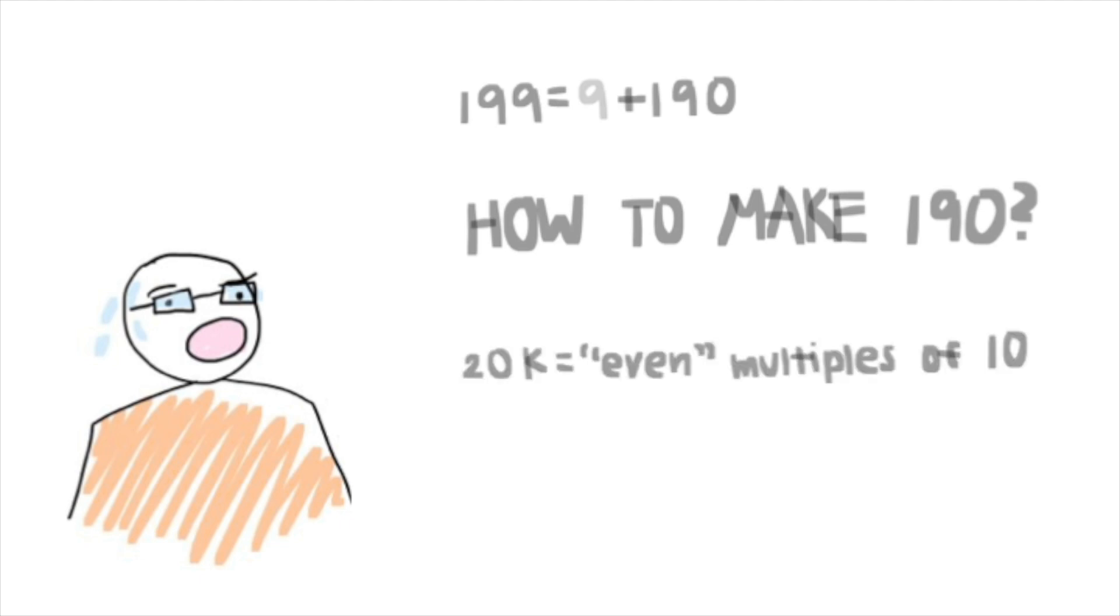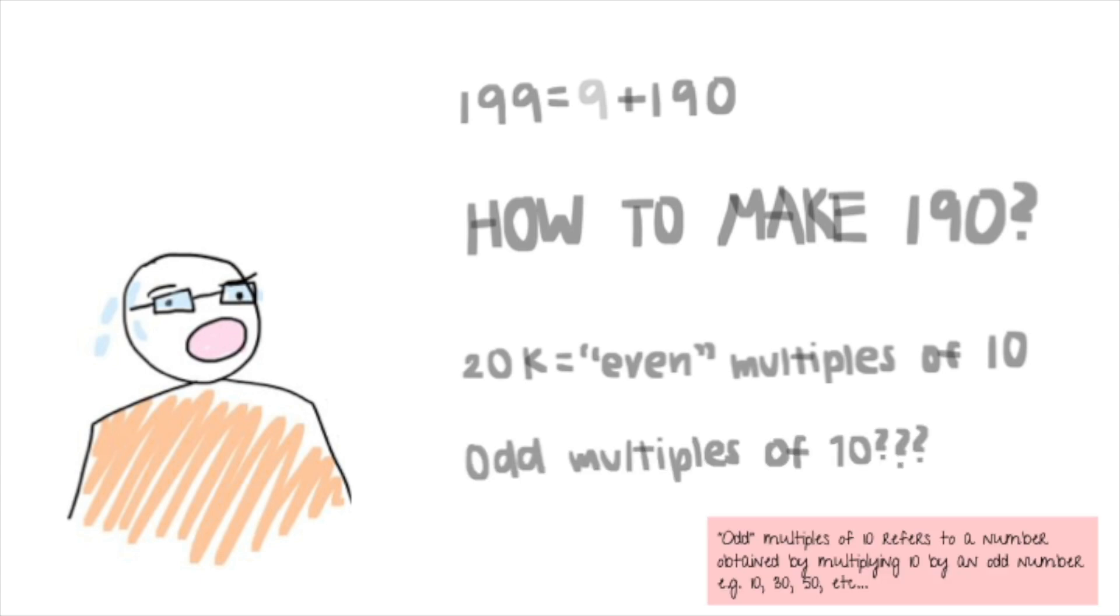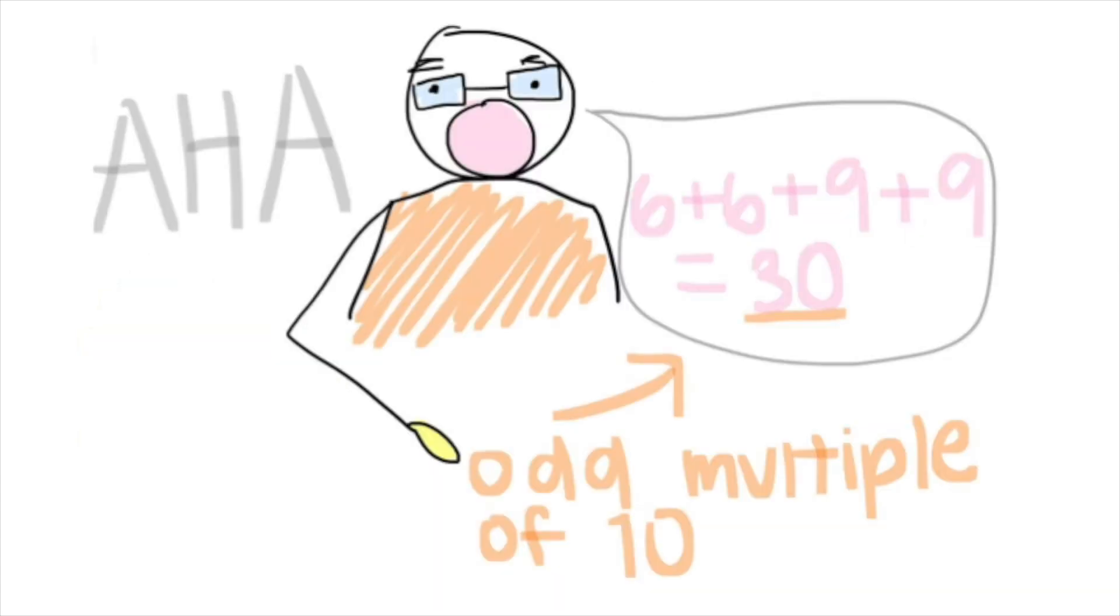We know that we can make any even multiple of 10 with a combination of 20s. But is there a way to make an odd multiple of 10? Aha! We can make an odd multiple of 10 by 6 plus 6 plus 9 plus 9 equals 30. Now we have a way to create an odd multiple of 10.